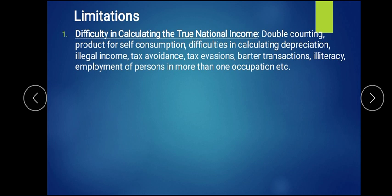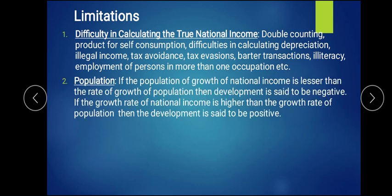For example, self-consumption — if you are making food and eating it yourself, that should not be calculated. Depreciation — only machines used for production should have their depreciation calculated. Tax evasion means many people are hiding their black money and paying less tax. All these things, including illiteracy and barter transactions, make it very difficult to calculate true national income.